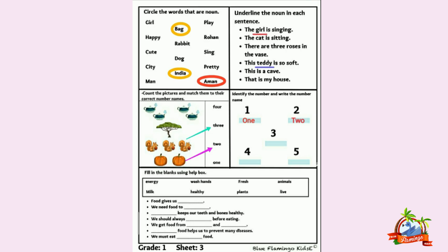Each and everything that has a particular name is a noun. Her woh cheez jis ka koi naam hai, usay hum noun kehte hai. Let's revise the definition of noun: Noun is the name of person, place, thing or animal. Nouns are also called naming words.